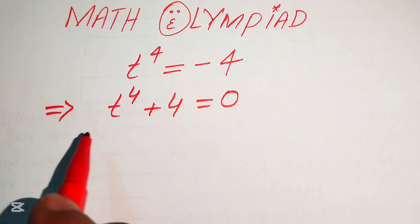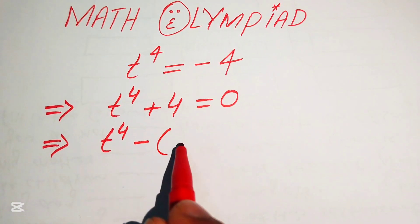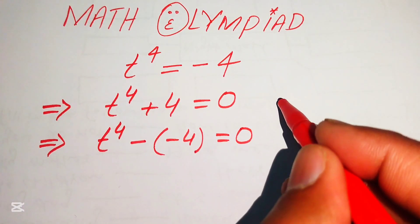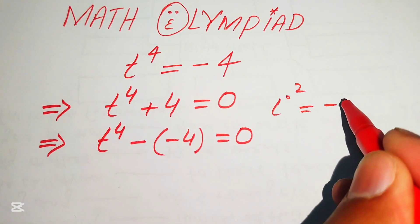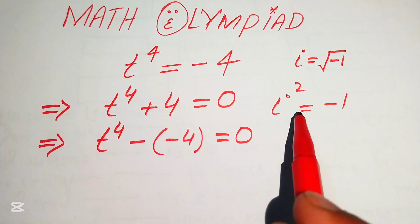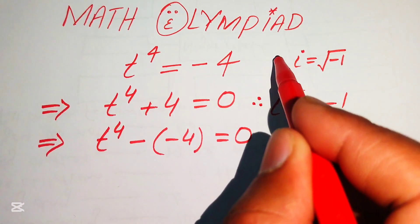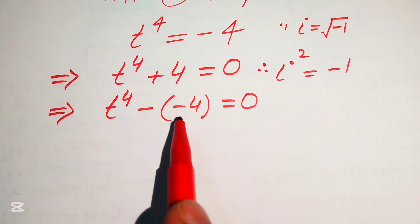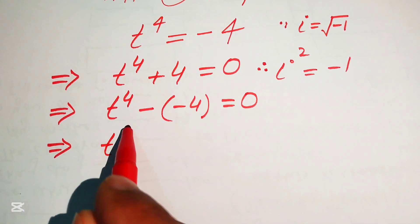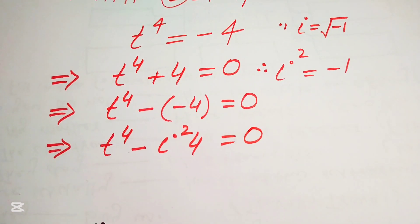We rewrite this equation as t to the power of 4 minus (minus 4) equals 0. We know that i² equals minus 1, so we substitute minus 1 with i², writing the equation as t to the power of 4 minus i² times 4 equals 0.